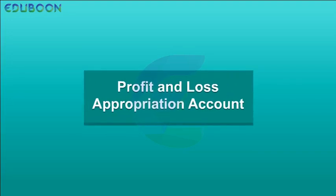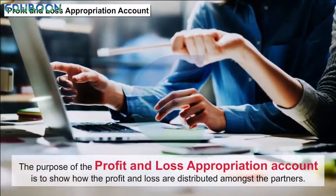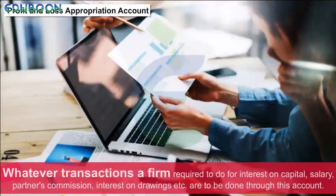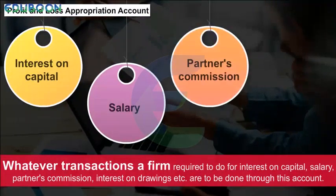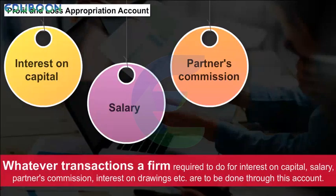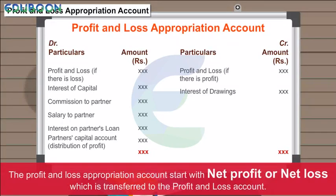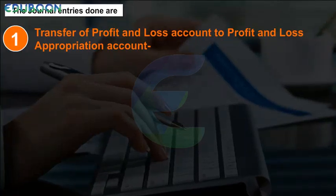Profit and Loss Appropriation Account. The purpose of the profit and loss appropriation account is to show how the profit and loss are distributed amongst the partners. Transactions required for interest on capital, salary, partners' commissions, interest on drawings, etc. are done through this account. The profit and loss appropriation account starts with net profit or net loss which is transferred from the profit and loss account. Journal entries include: (1) transfer of profit and loss account to profit and loss appropriation account.